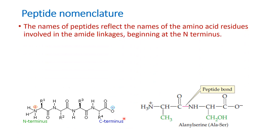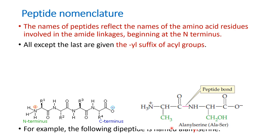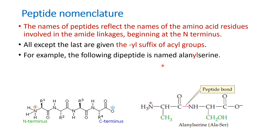The naming convention starts from the amino end, that is the N-terminal end. For every amino acid except the last, the 'ine' suffix is replaced by 'yl'. For example, alanine becomes alanyl. The final C-terminal amino acid is written with its full name. So when alanine and serine combine to form a dipeptide, it is called alanyl serine.